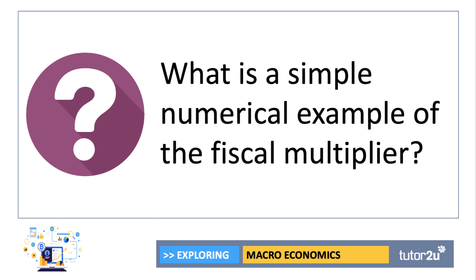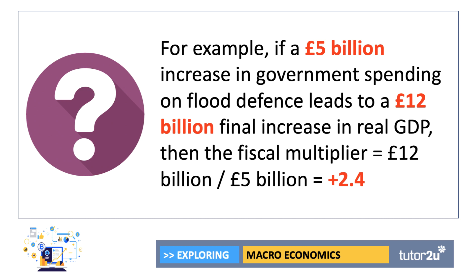So what is a simple numerical example of the fiscal multiplier? Let's take a situation where the government increases flood defence spending by, let's say, £5 billion — some major capital infrastructure projects. The estimate is that then leads to eventually a £12 billion final increase in real GDP. Then we would say that there has been a strong positive multiplier effect. The final change is £12 billion, the initial change was £5 billion. Divide one by the other and you get a multiplier effect of plus 2.4, which is actually quite a high figure.